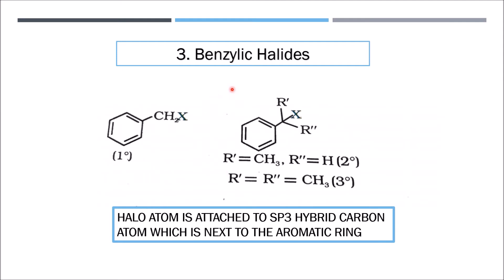The third criteria is benzylic halides. In benzylic halides, the halo atom is attached to an sp3 hybrid carbon, but this carbon is further attached to a phenyl ring or aryl group — that is, to the benzene ring. Hence the name 'benzylic' comes from the fact that the neighbor of the carbon bearing the halogen is a benzene ring.